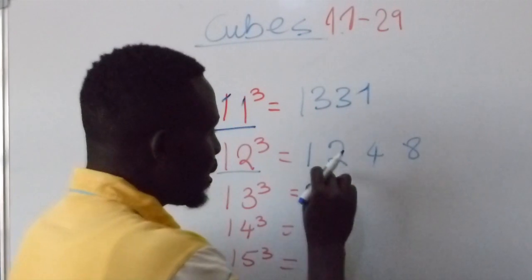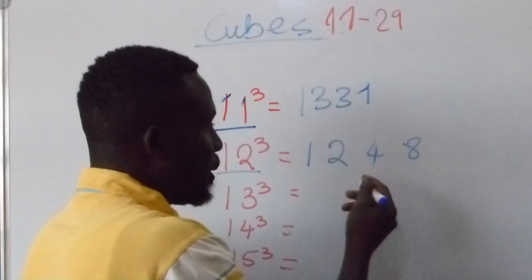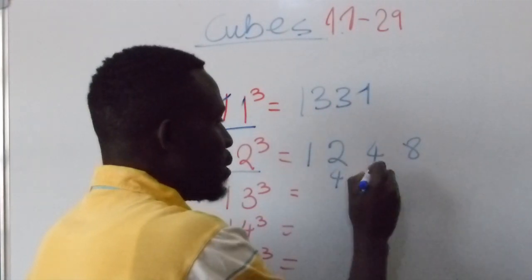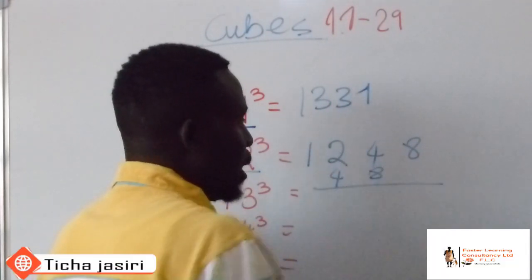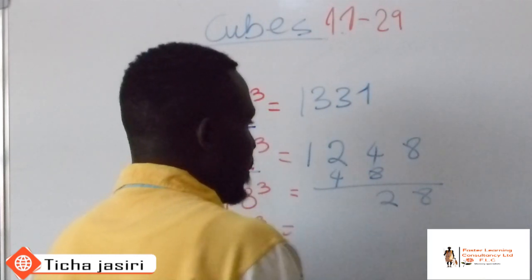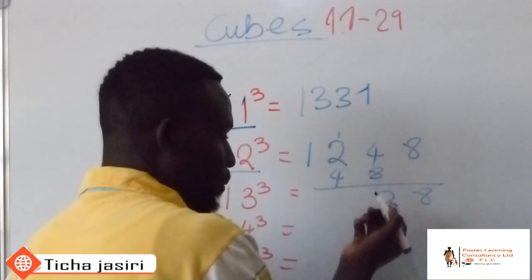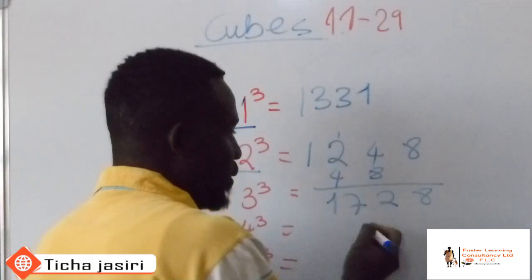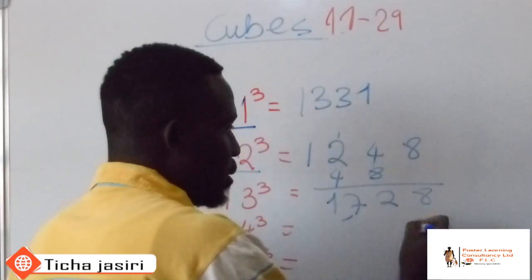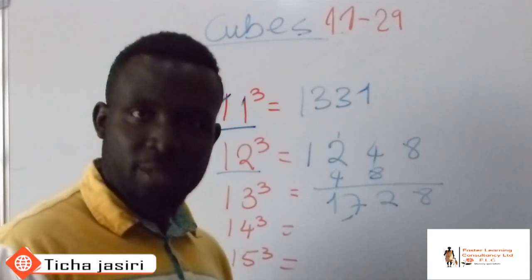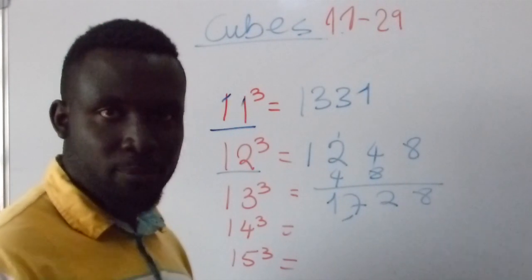Now the next thing you are going to do, you are going to multiply this one by 2, multiply this one by 2, and then add it. So this one by 2 is going to give you 8, this one by 2 is going to give you 8. Now you add them down, you have 8, you have 12. You have here 1. So this is going to be 7, and this is 1728. So this one becomes your answer. Easy like that, it's straightforward and to the point.